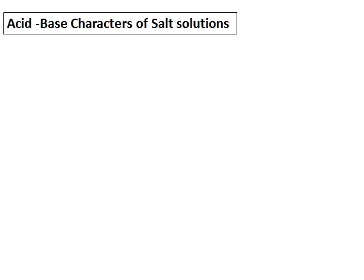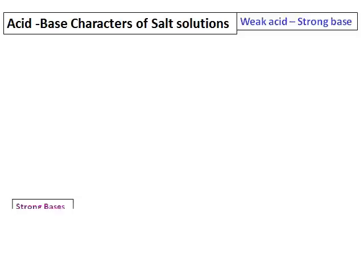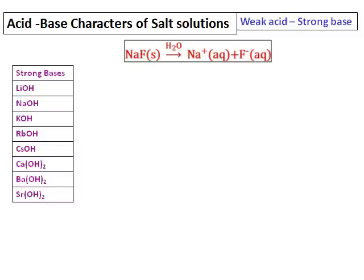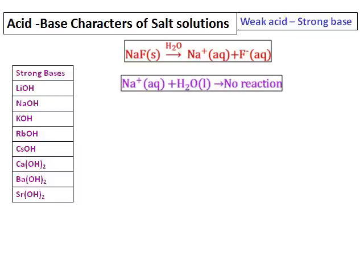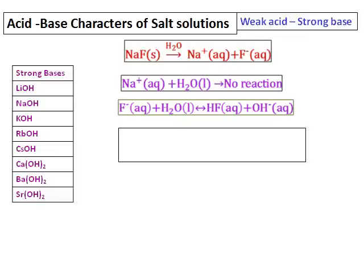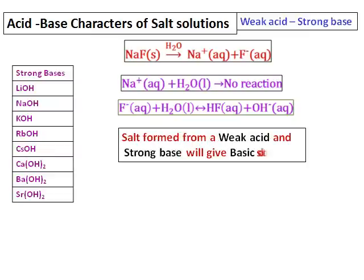The next kind of salt is from a weak acid and a strong base. Consider sodium fluoride, formed from the strong base sodium hydroxide and the weak acid HF, which dissociates into sodium ions and fluoride ions. When dissolved in water, sodium ion does not react with water. But the fluoride ion — the conjugate base of the weak acid HF — reacts with water to give a hydroxide ion solution. The presence of hydroxide ion makes the solution basic. So a salt from a weak acid and a strong base gives a basic solution.